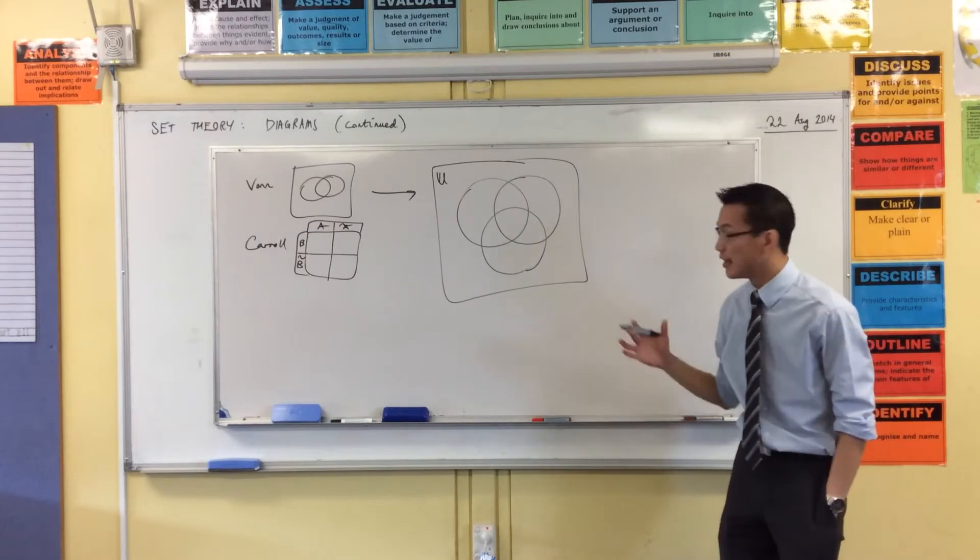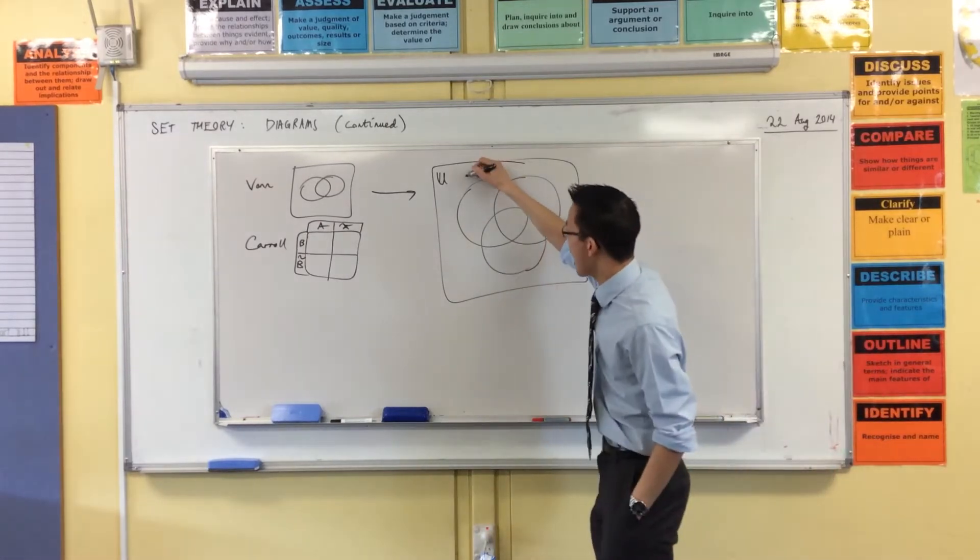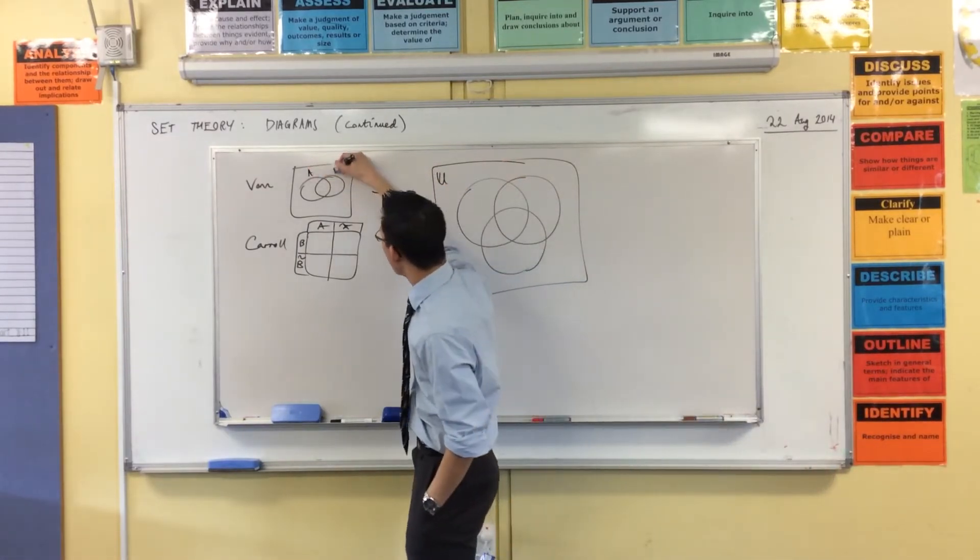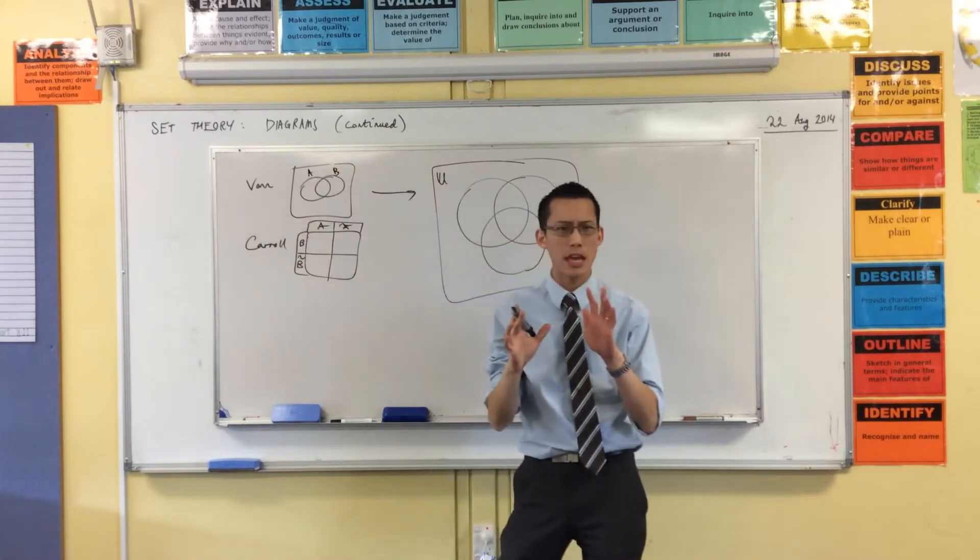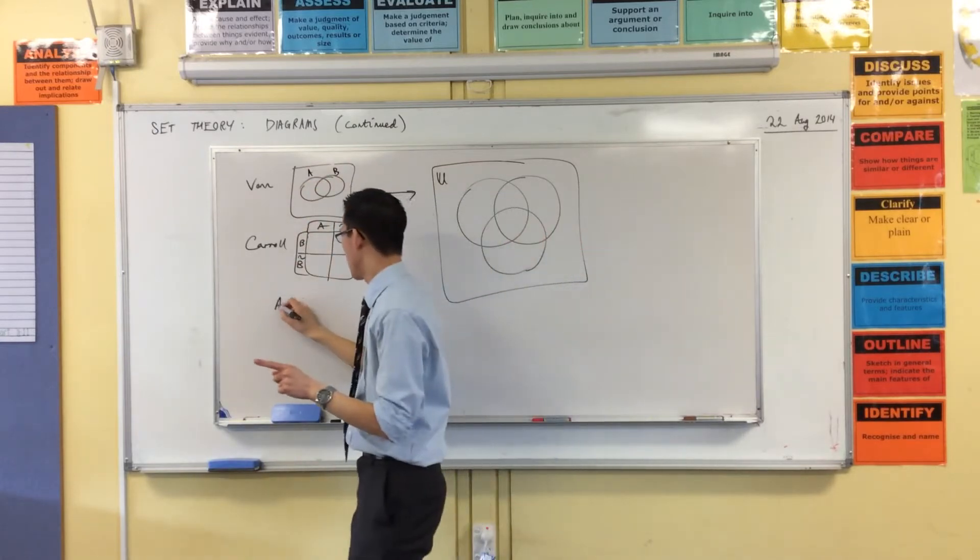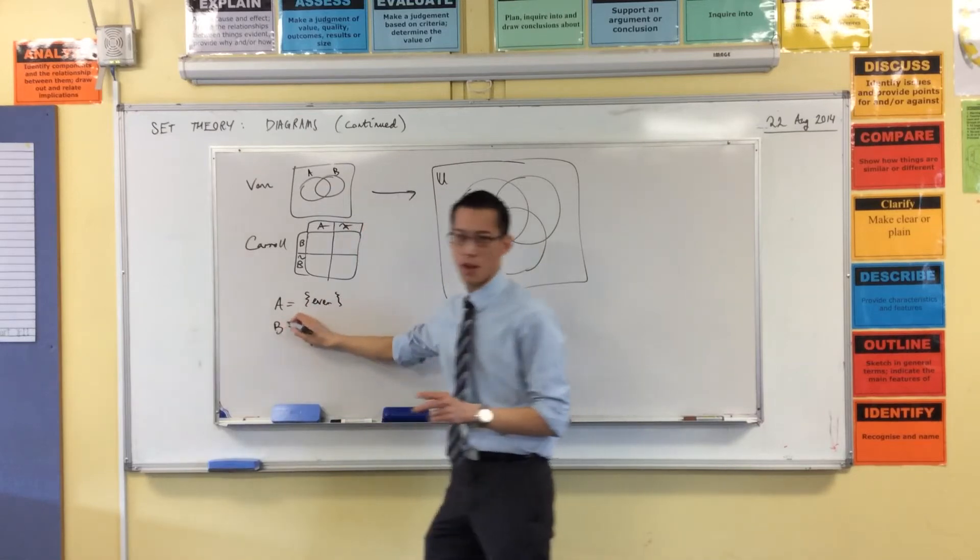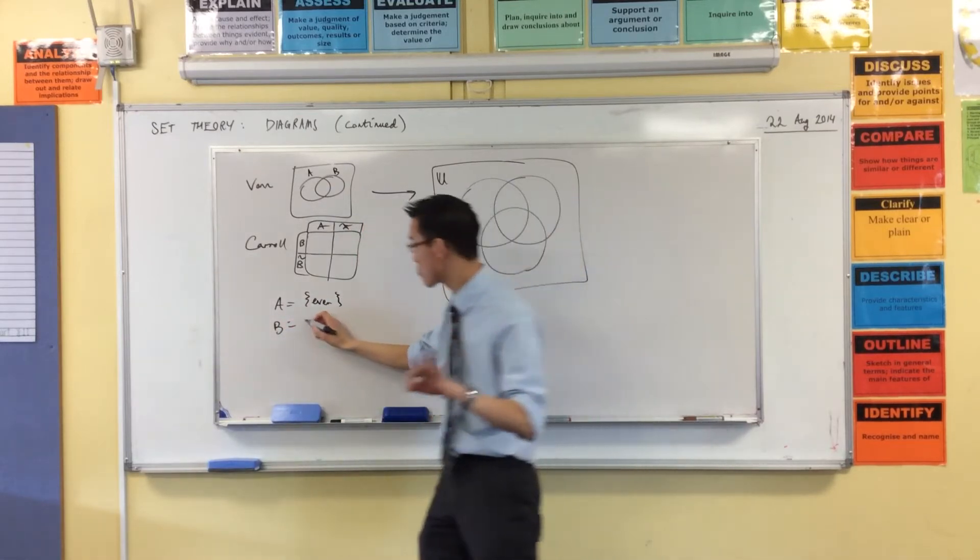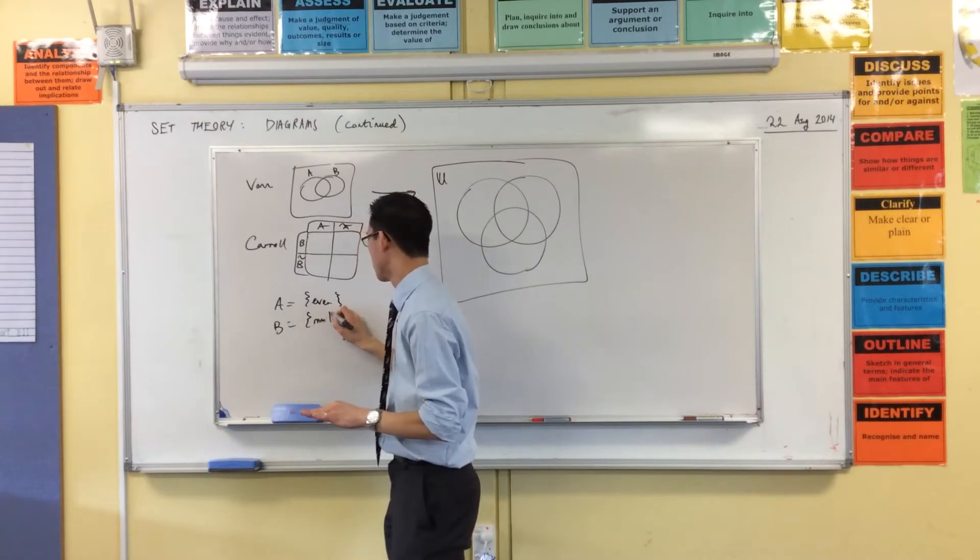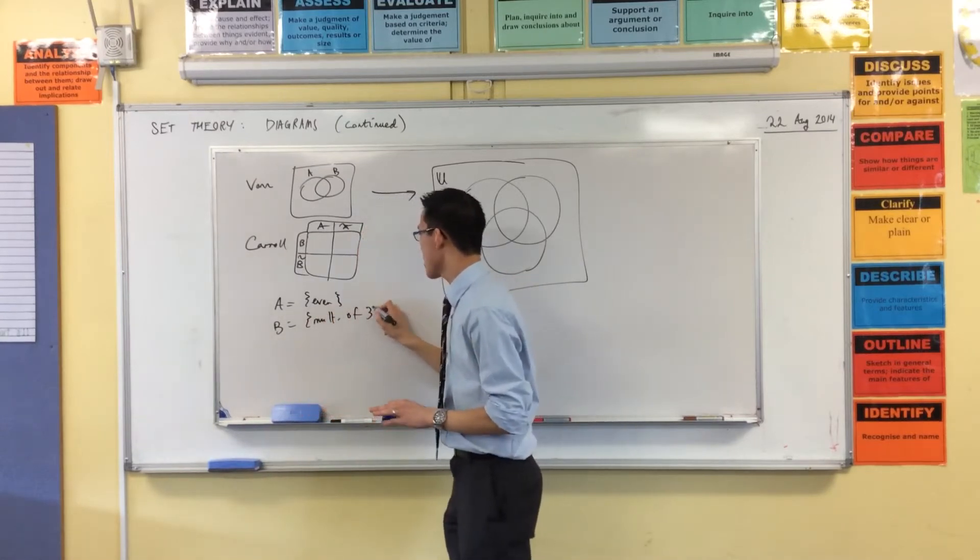Now, before we move off this, let's think of an example. We had an A and a B before. From memory, I think we said A were the even numbers. Is that right? A were the evens? Yeah. Then we said B were the multiples of three. Multiples of three. Okay.